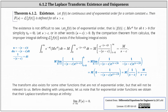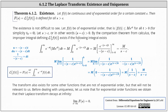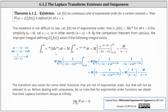The existence isn't too difficult to see. Let f of t be of exponential order — that is, the absolute value of f of t is less than or equal to m times e to the ct, for all t greater than zero (with t sub zero equals zero). Let s be greater than c, so s minus c is greater than zero. By the comparison theorem from calculus, the improper integral defining the Laplace transform exists if the following integral exists: the integral from zero to infinity of e to the negative st times m times e to the ct dt. We factor out m and add the exponents, giving e to the negative quantity s minus c times t. To integrate, we perform u substitution.